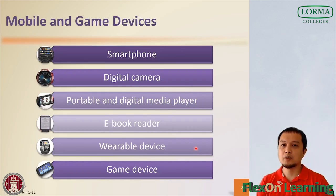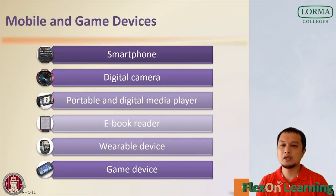A wearable device, or wearable, is a small mobile computing device designed to be worn. These devices often communicate with mobile devices or computers. Wearable devices include activity trackers, smart watches and smart glasses. An activity tracker monitors heart rate, measures pulse, counts steps and tracks sleep patterns. In addition to keeping time, a smart watch can communicate with a smartphone to make or answer a phone call, read and send messages, access the web, play music, work with apps and more. With smart glasses, a user can look into an eyeglass-type device to view information or to take photos and videos that are projected to a miniature screen in the user's field of vision.